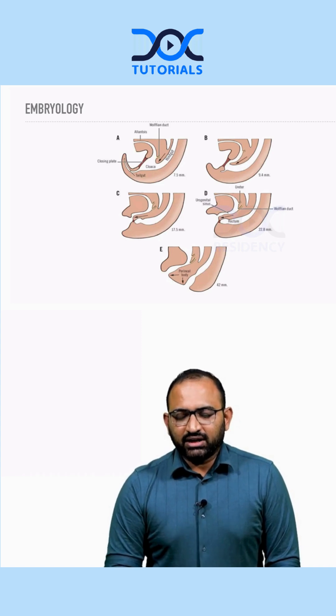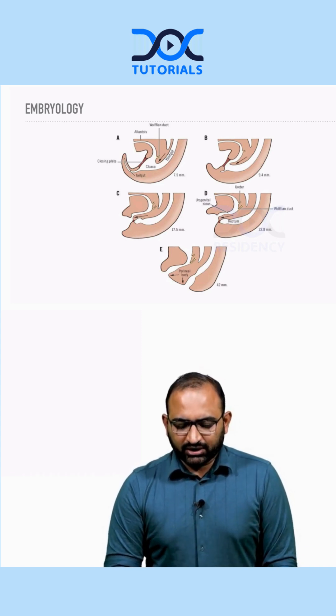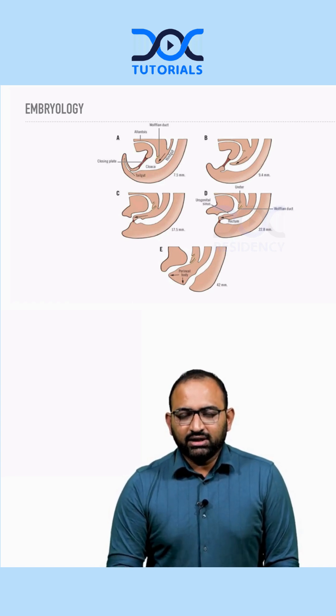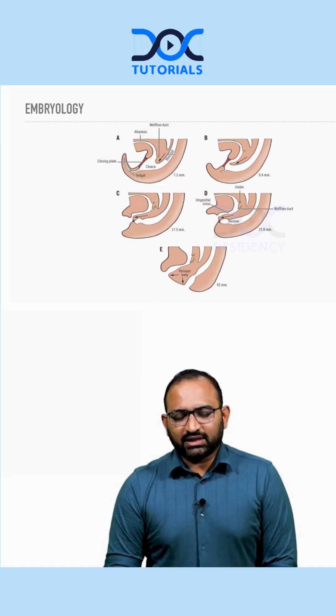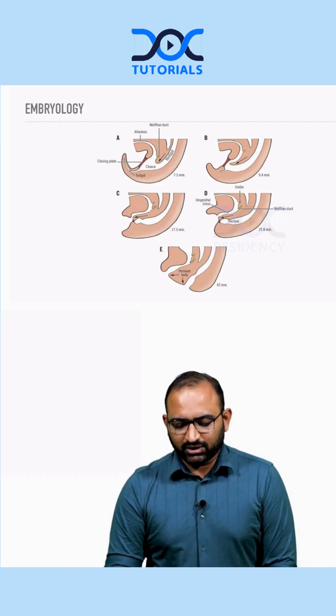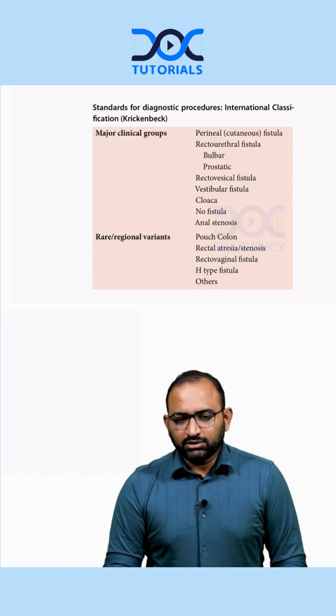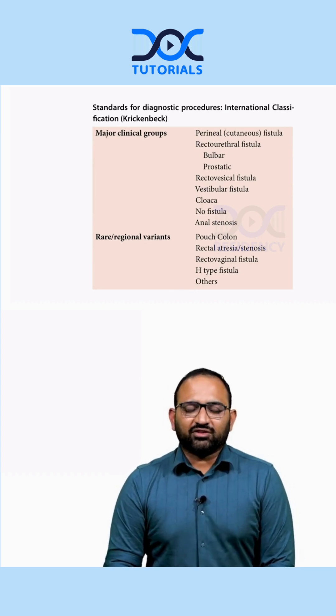When the rectourethral plate disintegrates before it reaches the cloaca membrane, various forms of anorectal malformation result. How do we classify anorectal malformation?